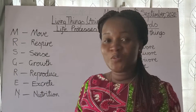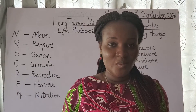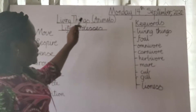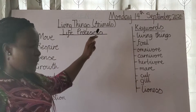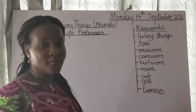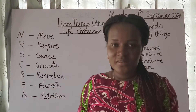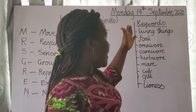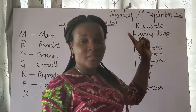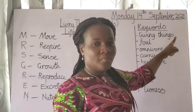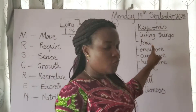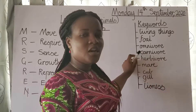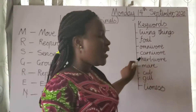Hello, welcome to today's lesson. We have Science, and our topic for today is living things. Say after me: living things. Last week we talked about plants as living things. Today we are going to talk about animals as living things. These are key words — say after me: living things, food, omnivore, carnivore, herbivore, beaver, cub, gill, lioness.